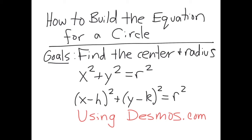What a beautiful day to do some math. What I'm going to show you today is how to build an equation for a circle. The main things you're going to need are the center and radius of the circle, and then you'll need these two equations. The first equation is if the center of the circle is at zero, zero — the origin — and the second equation is used if the center is some h comma k.